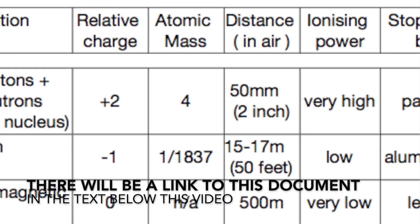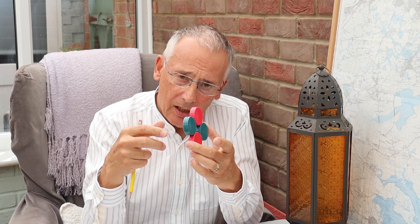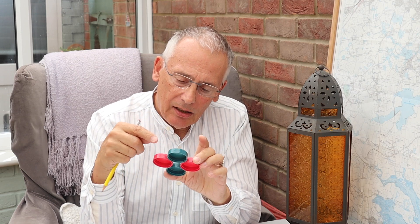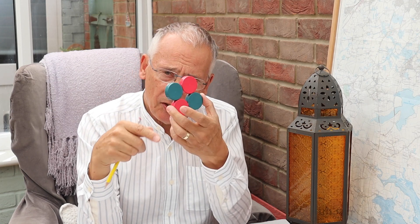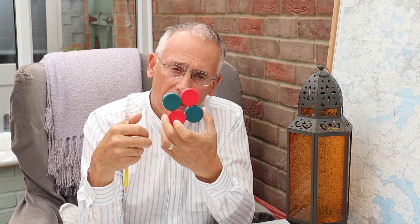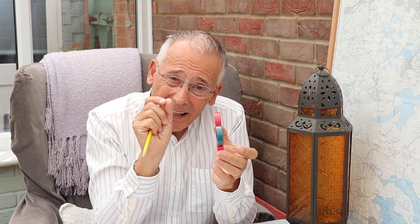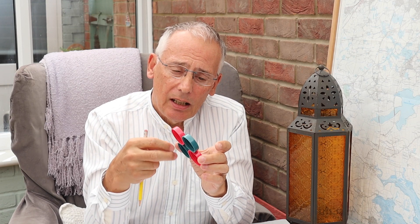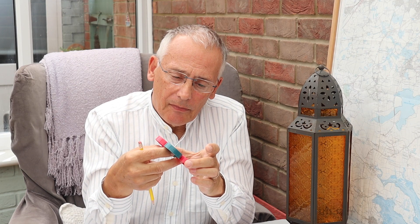An alpha particle can only travel a couple of inches — about 50 to 70 millimetres in air — because it's quite big and bumps into air molecules and slows right down. However, because it has a double positive charge, if you get that inside you — for example, a little bit of dust from a radioactive, alpha-emitting isotope — it would damage your organs quite severely. It can be stopped by skin when outside the body, or even a bit of paper.